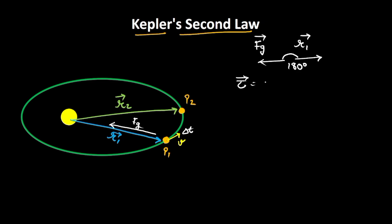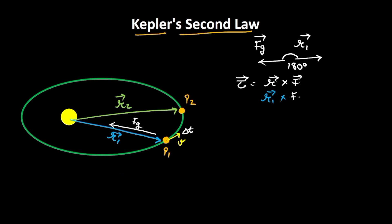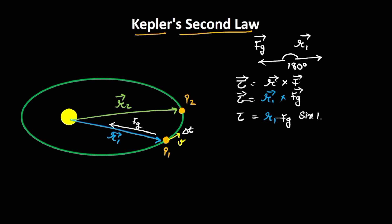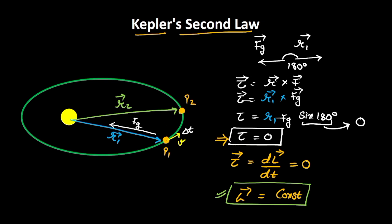If we find the torque, torque equals position vector cross force vector. So torque = R1 × Fg = R1 · Fg · sin(180°) = 0, since sin(180°) = 0. Once we know torque is zero, we can relate it to angular momentum: torque = dL/dt. Since torque is 0, dL/dt = 0, meaning the angular momentum L of the planet is constant.